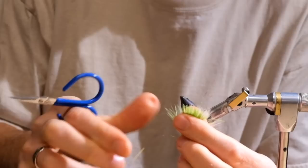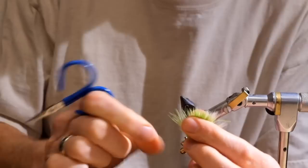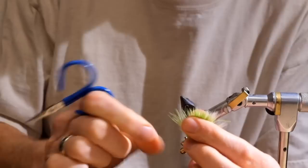And our final step after we remove the fly from the vise is I want to take those pieces of flash that run down the side of the fly and trim them so it's the same length as the Miraboo.